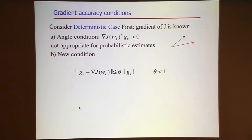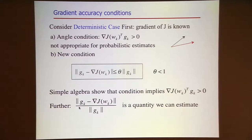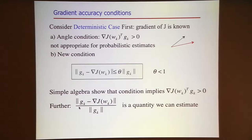I'm going to try to impose that condition. It is very easy to show—I give it in my final exam of the optimization class because it can be done in two minutes—that if this norm condition is satisfied, then you also satisfy the angle condition. So let me call it the theta condition: it implies that the stochastic gradient is pointing in a descent direction with respect to the true objective function.